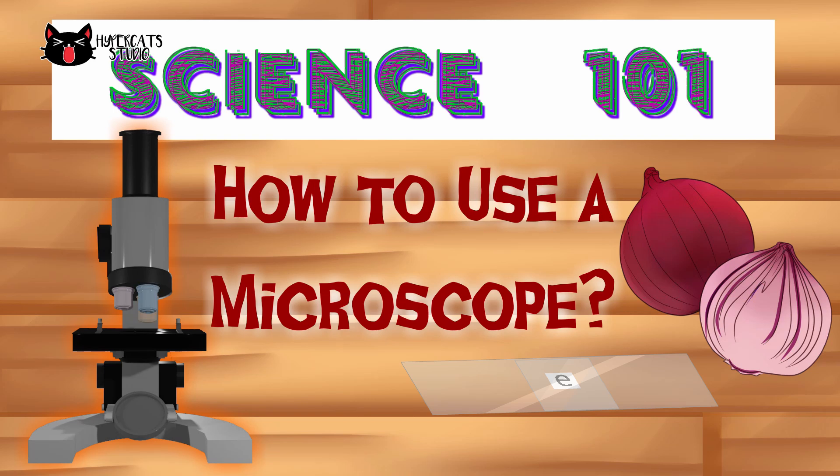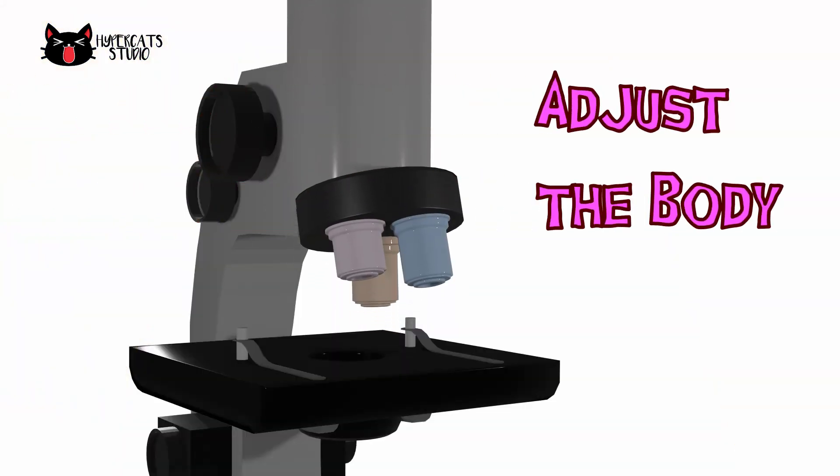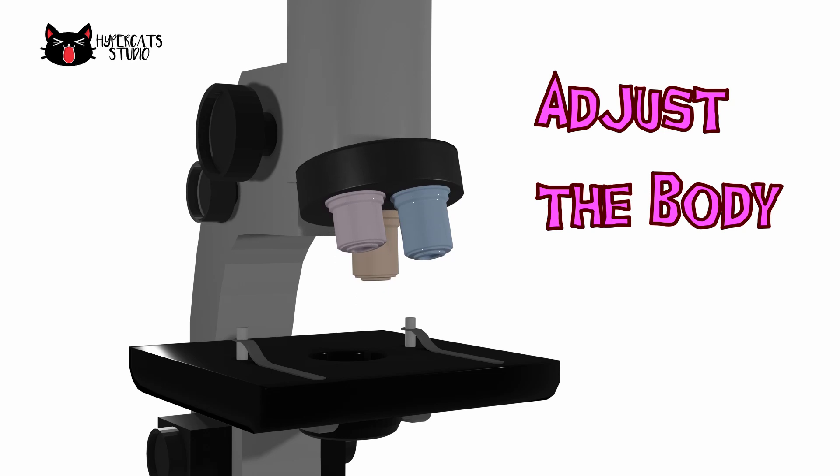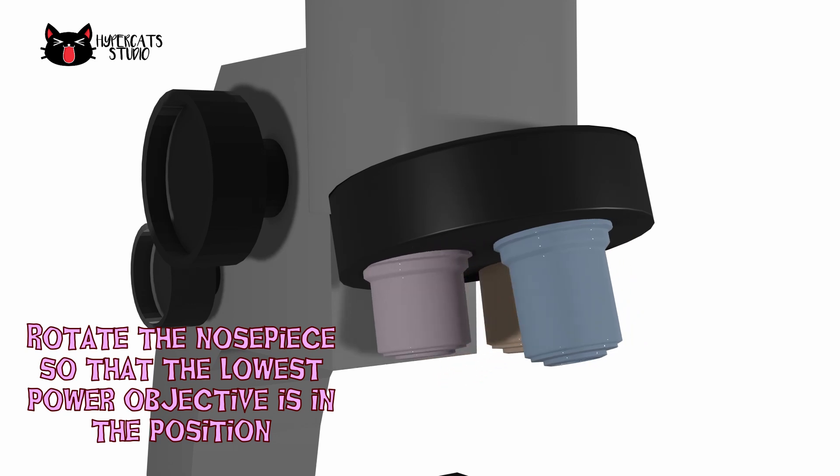To observe our specimen in the microscope, adjust the body by rotating the coarse adjustment knob. Then turn the revolving nosepiece so that the lowest power objective lens is clicked into position.